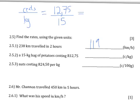First, I'm going to convert R12.75 to cents. There are 100 cents in a rand, so we multiply by 100, which means moving the decimal point two places to the right. So R12.75 is the same as 1275 cents over 15 kilograms. Since we want it per one kilogram, we divide both the numerator and denominator by 15.